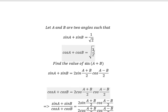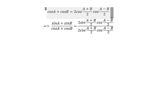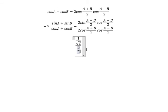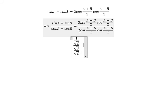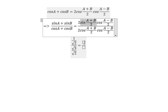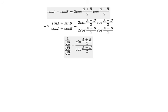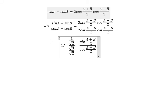We divide the first equation by the second. On the left we have 1 over the square root of 2, divided by the square root of 3 over 2. The 2's cancel and the cosine of (A minus B) over 2 terms cancel, leaving sine over cosine. The square root of 2 terms also cancel, giving us 1 over the square root of 3.